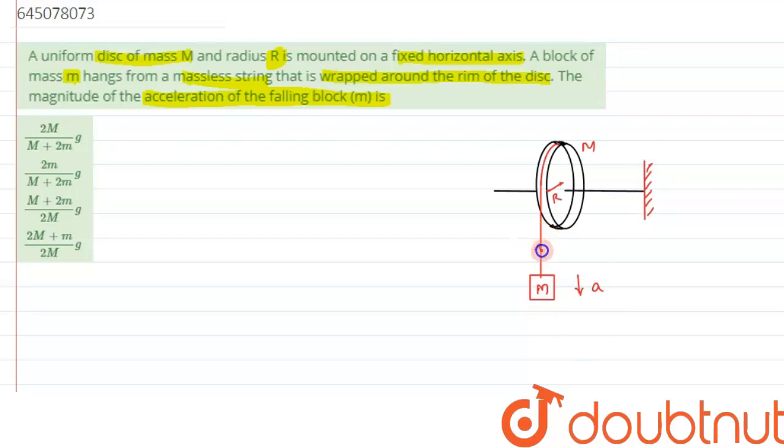Tension will be acting in the upward direction in the string. Due to this, the disc will start rotating and will experience a torque. The torque experienced by the disc can be written as τ = Iα.